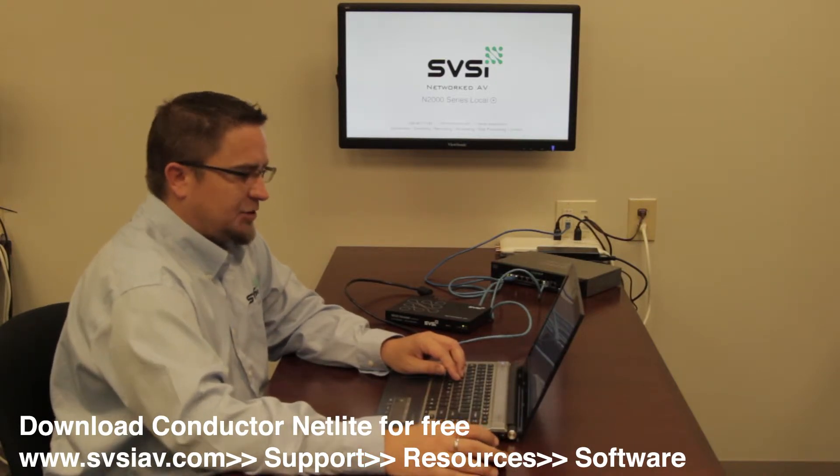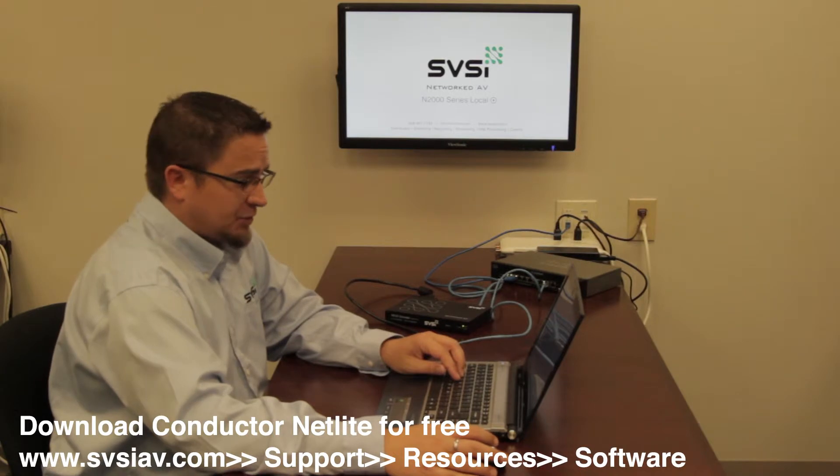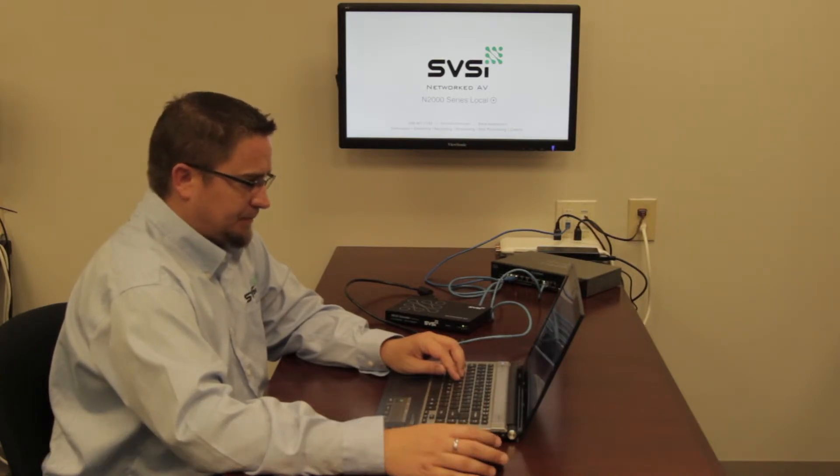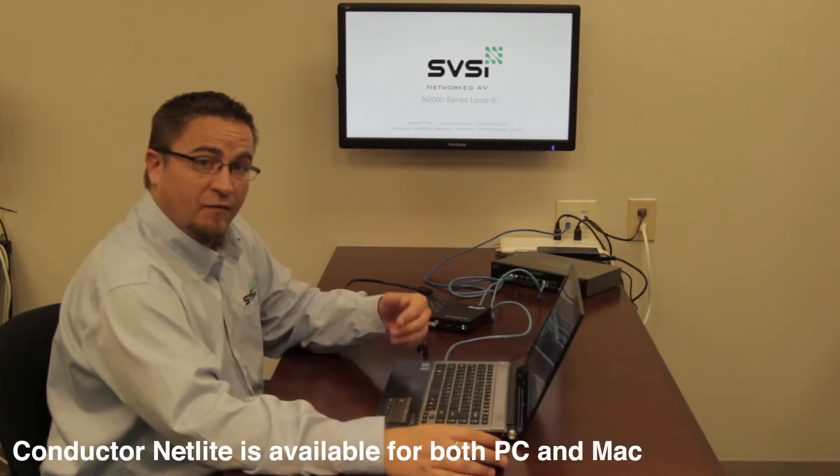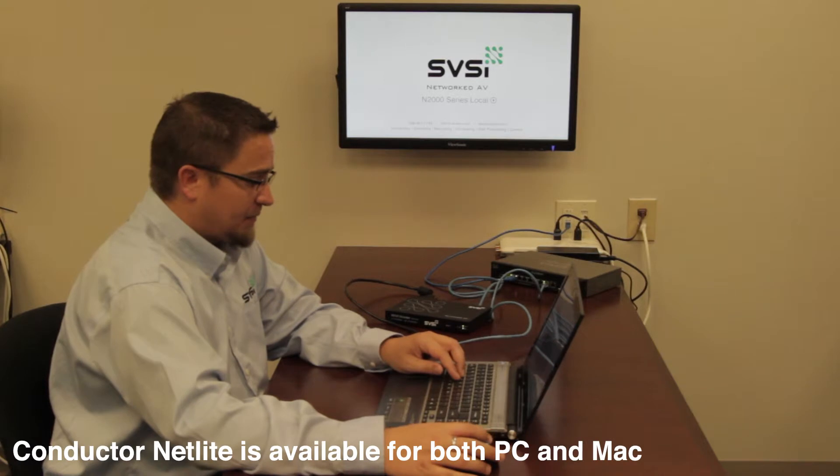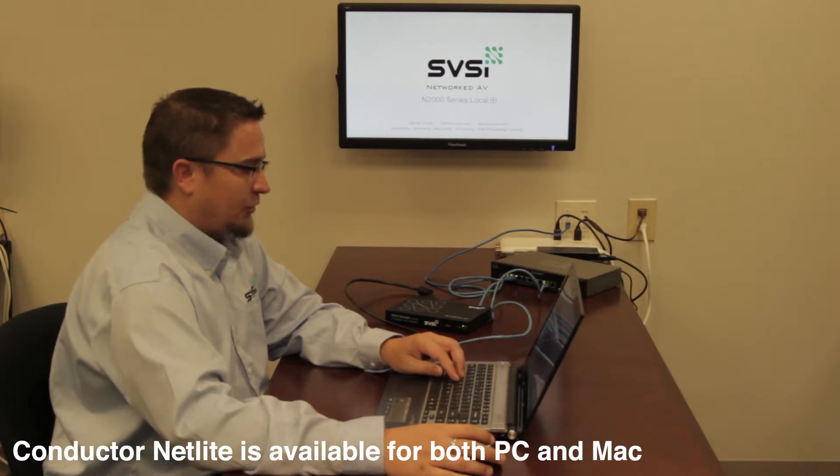Then we're going to click on support, resources, and then software. And under software you'll see there's two versions of Netlite, one for PC and one for Mac. So I'm going to obviously download the PC version.